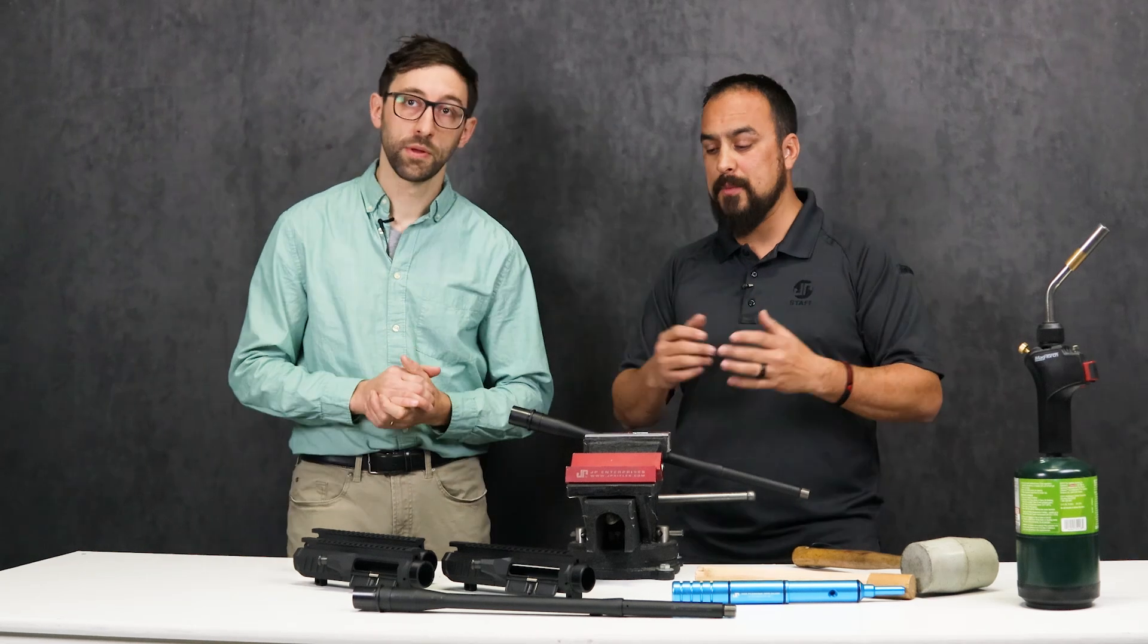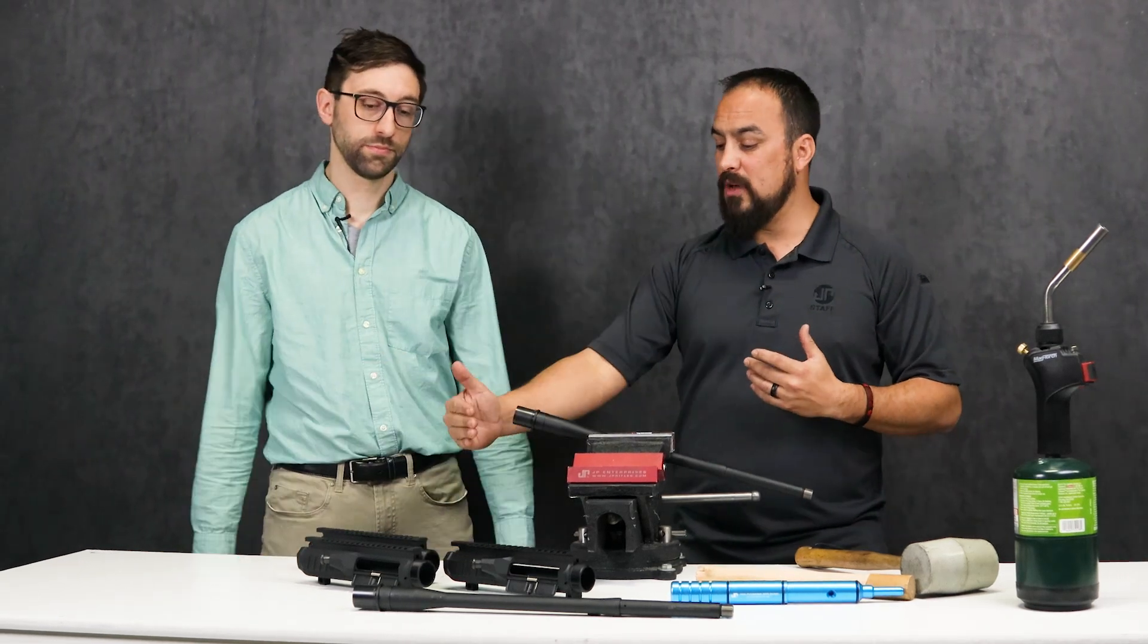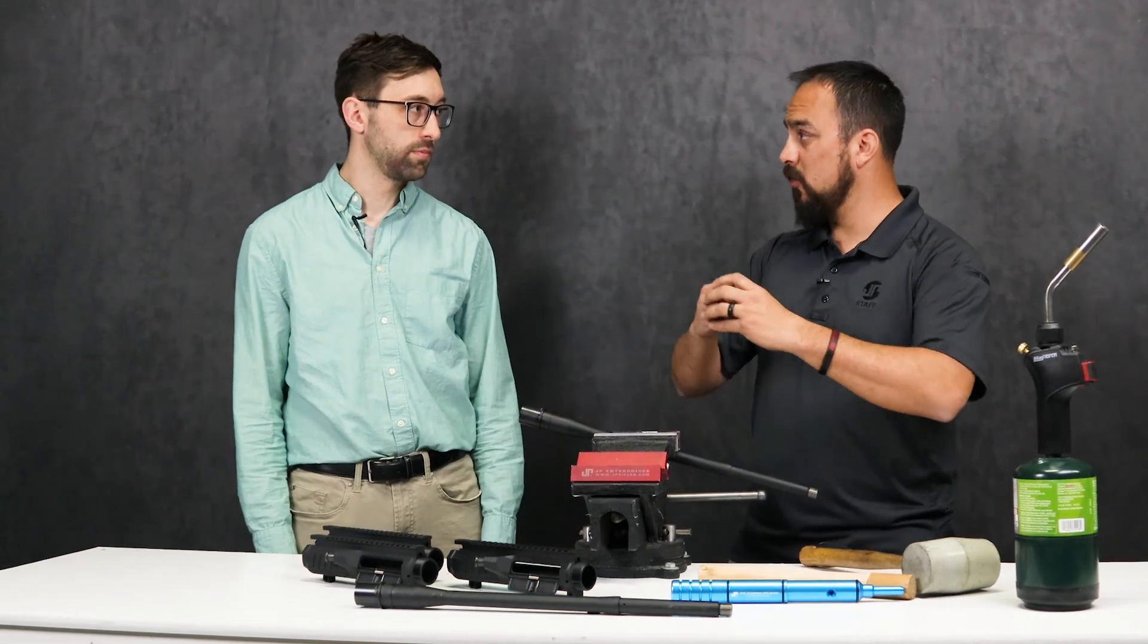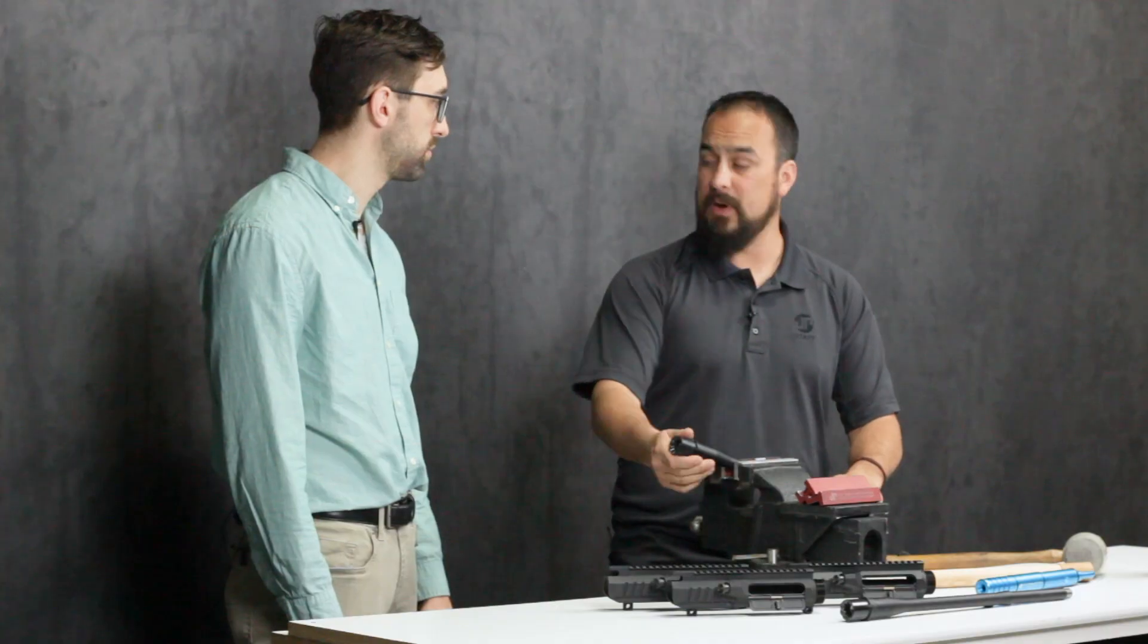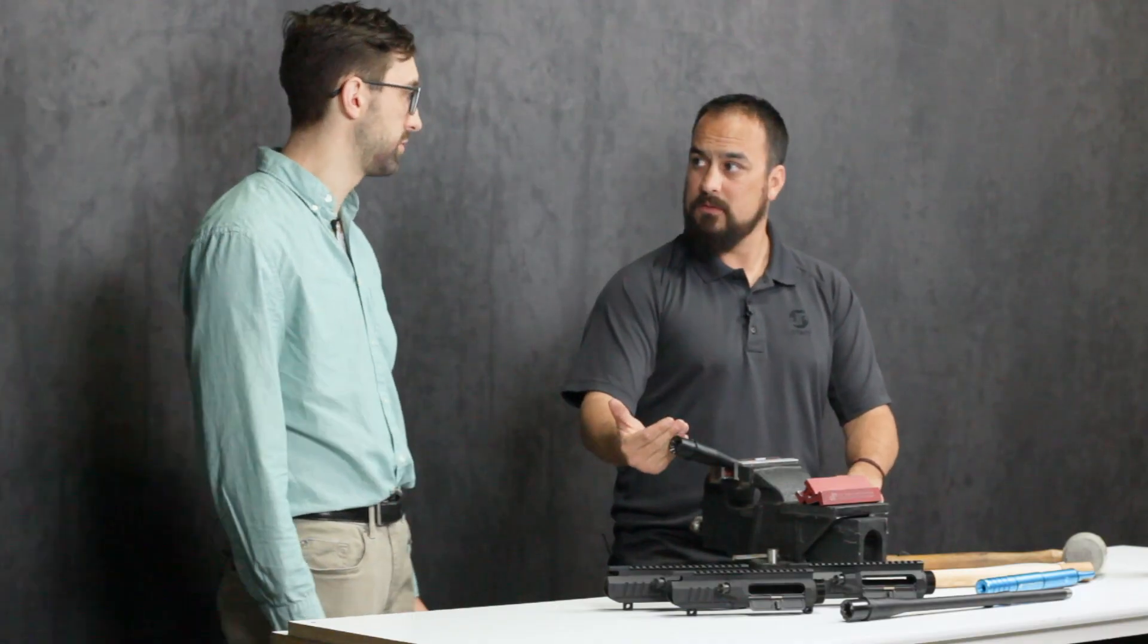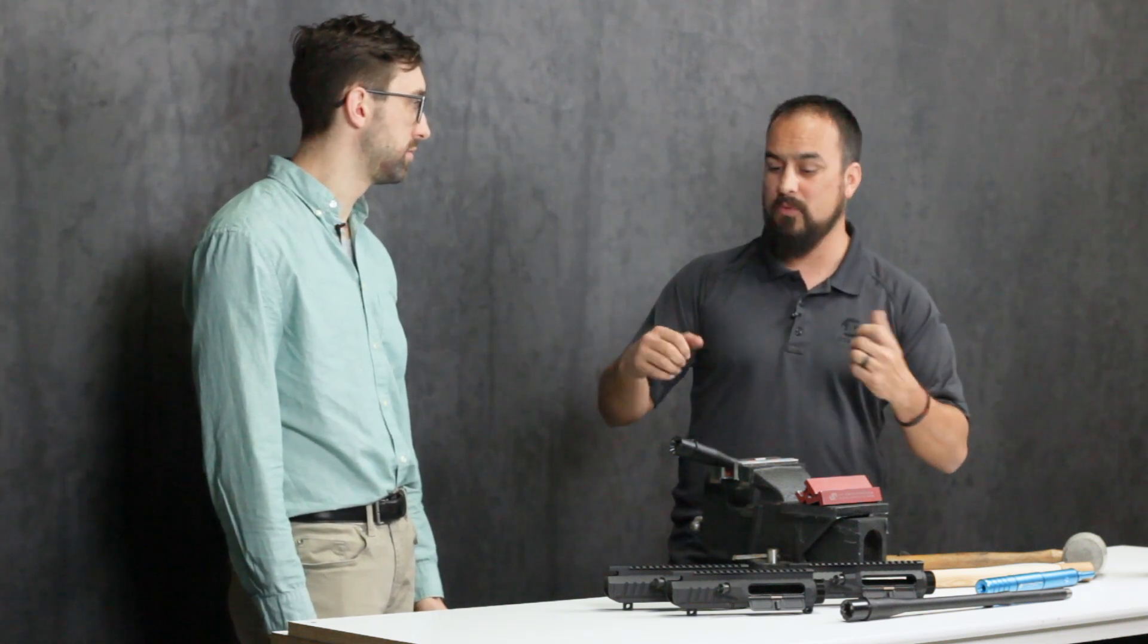Right, so the Thermofit process is actually where we will heat up the receiver to get the aluminum to expand to fit around the barrel extension. And then we're gonna slide it on and it's more of a tension fit once it's in there and I've tried pulling them apart with just the barrel in the receiver and I couldn't get it out.